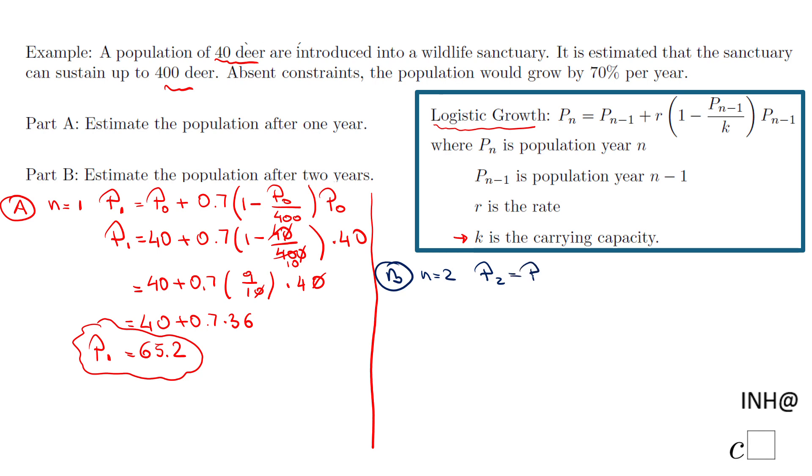P sub 1 plus 0.7 times 1 minus P sub 1 over 400, times P sub 1. So very similar formula, the only difference is instead of P sub 0 we use P sub 1.